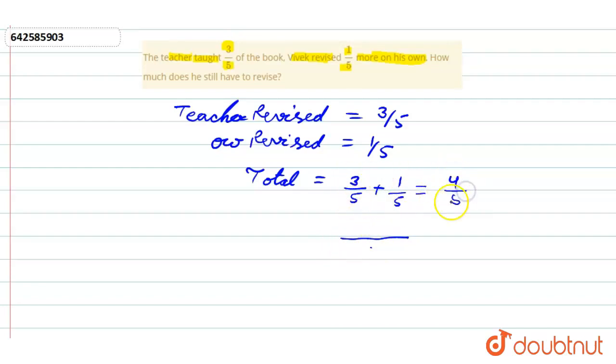Now, how much does he still have to revise? The total book is one. From that we subtract what he revised. Remaining will be one minus what he revised, which is one minus four by five.